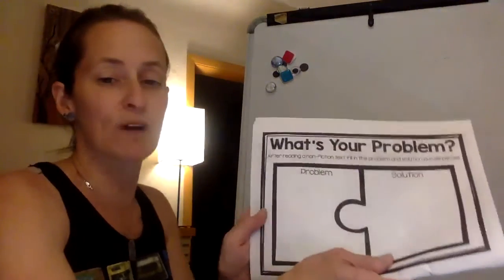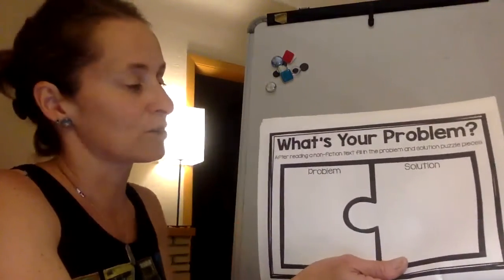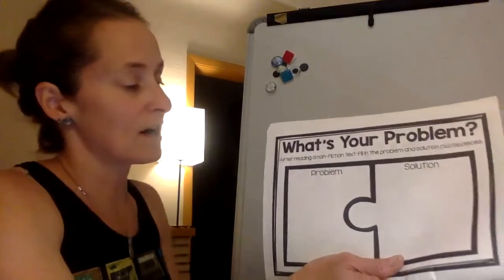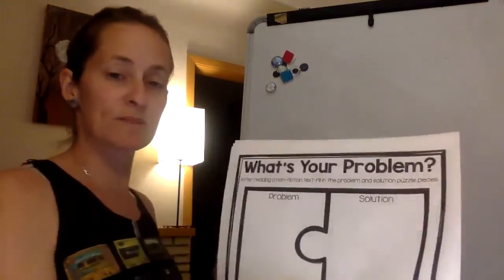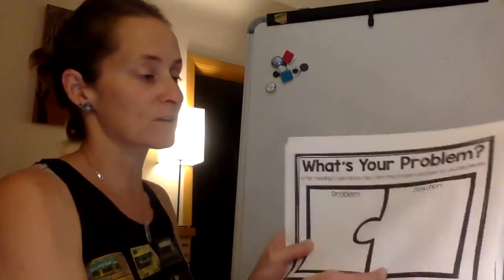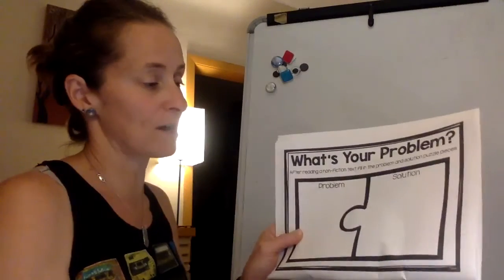And then on the back side, kind of going back to what we learned last week about problem and solution. And when you're reading informative text, how to go back and figure out what is the problem of the article? And what are some solutions to help with that problem?